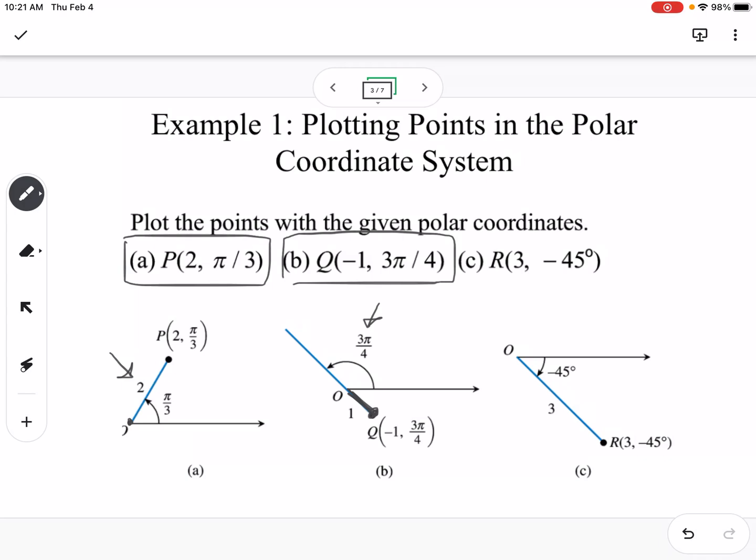And then our final point R, negative 45 works the same way as when we were doing the unit circle and trig, so we're going clockwise instead of counterclockwise 45 degrees, and so this would be 3 negative 45 degrees.